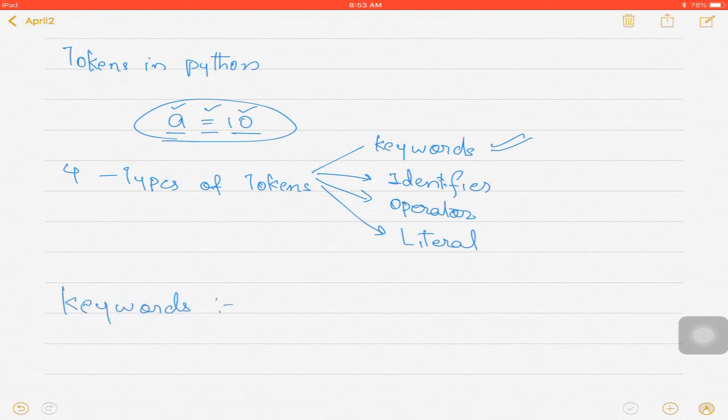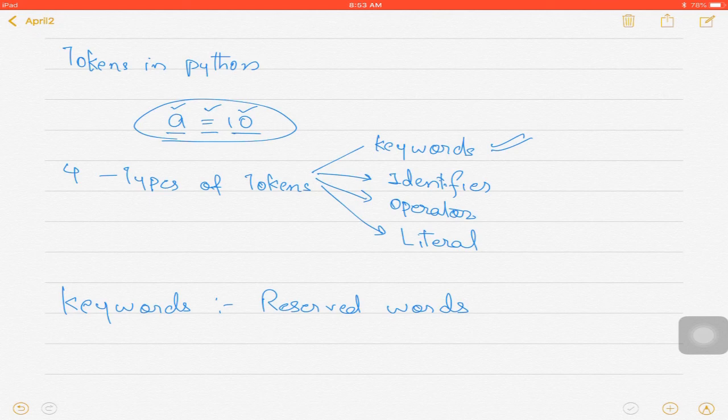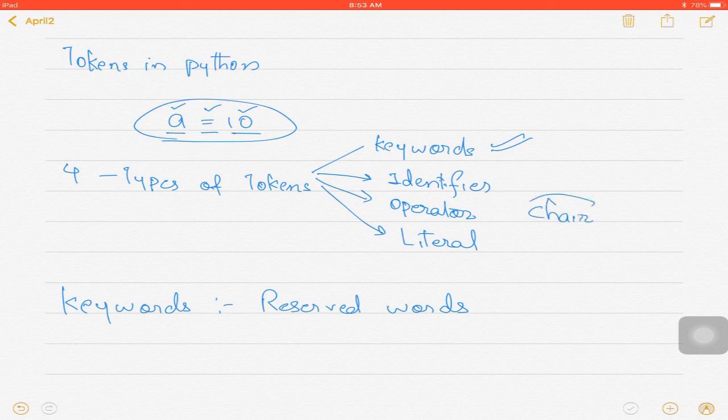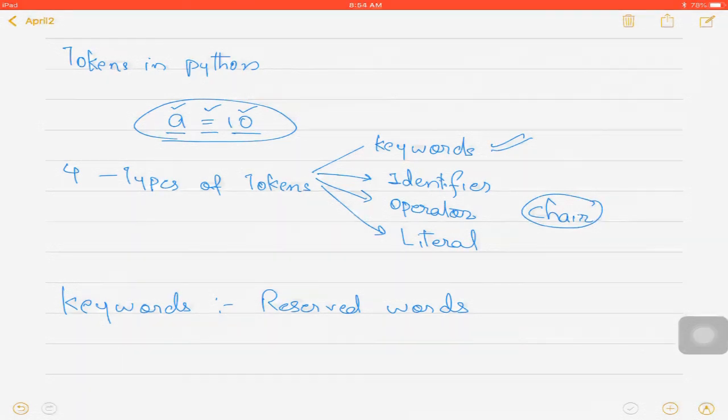Keywords are nothing but reserved words. Every programming language, or even a normal language per se, will have some reserved keywords or reserved words which convey a special meaning. For example, if I write something of this sort like 'a chair,' you understand a chair is an object on which you sit upon.